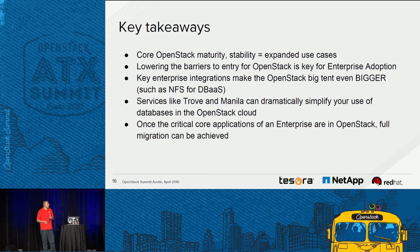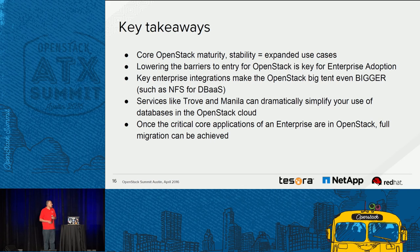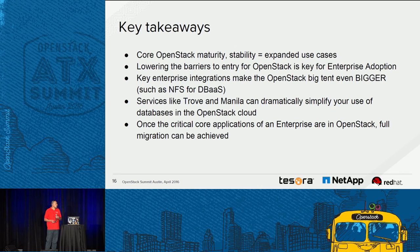The key takeaways: core OpenStack maturity and stability translates to expanded use cases. As we get into those expanded use cases we want to lower the barriers to entry for enterprise adoption — that is a goal for many of us within OpenStack. These key enterprise integrations make the OpenStack tent even bigger, and services like Trove and Manila can dramatically simplify the use of databases in the OpenStack cloud. Once the critical core applications of an enterprise are in OpenStack, full migration can be achieved — and that is the ultimate goal.